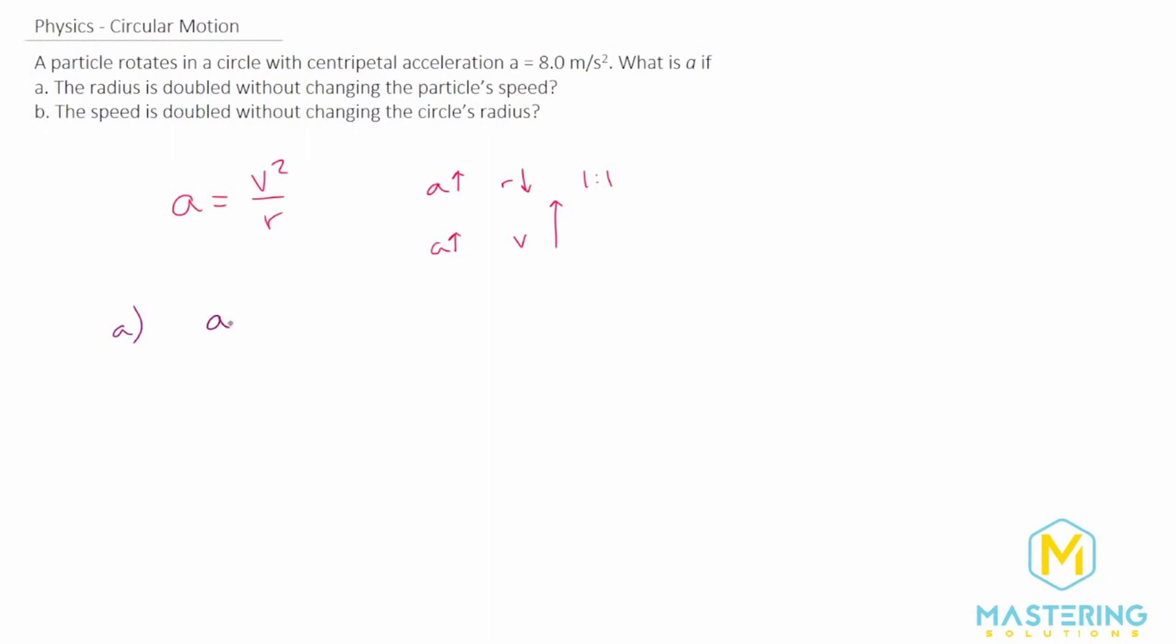We want to know how the new acceleration is changing with respect to the old acceleration. The old acceleration formula is v squared over r, but in the new one, the velocity is not changing but the radius is doubling.